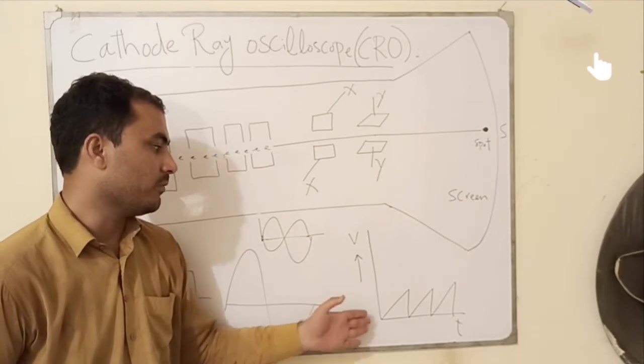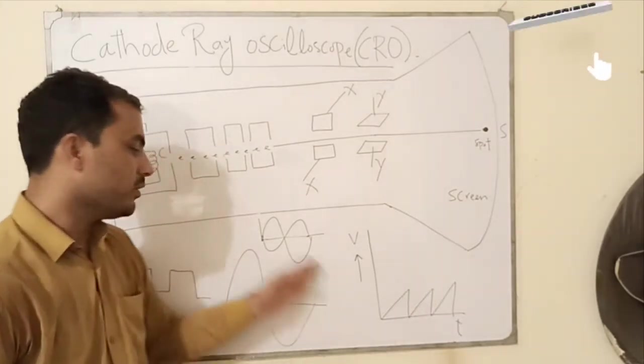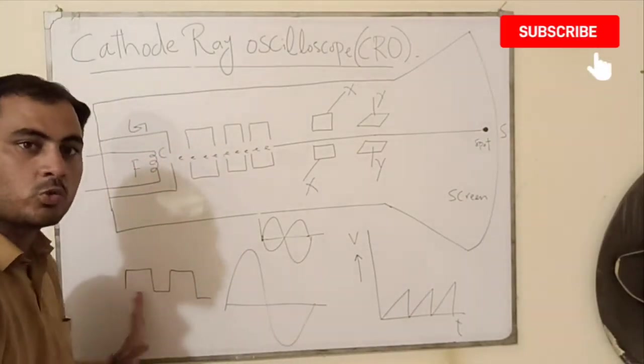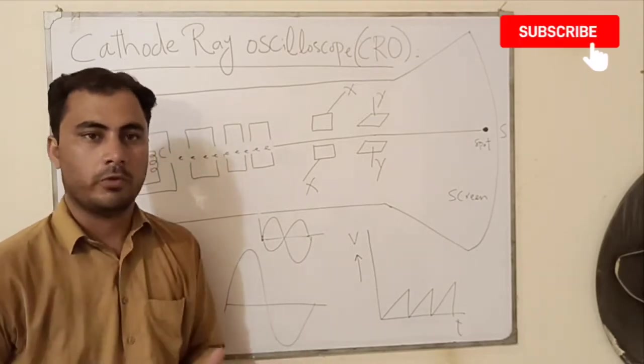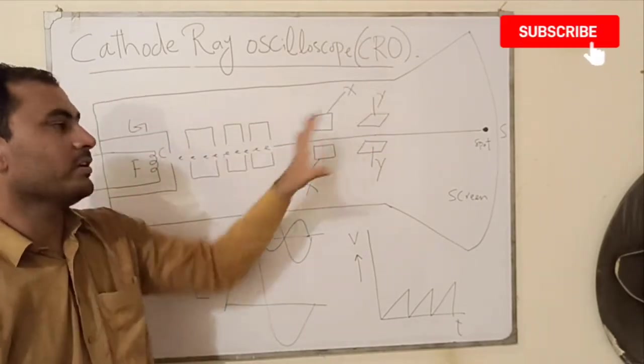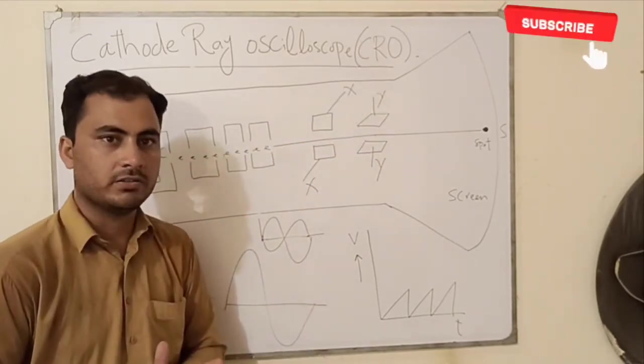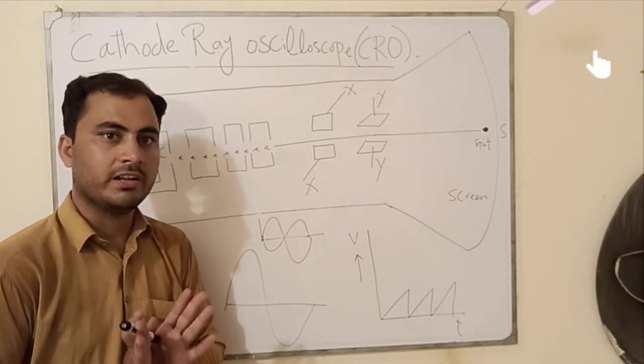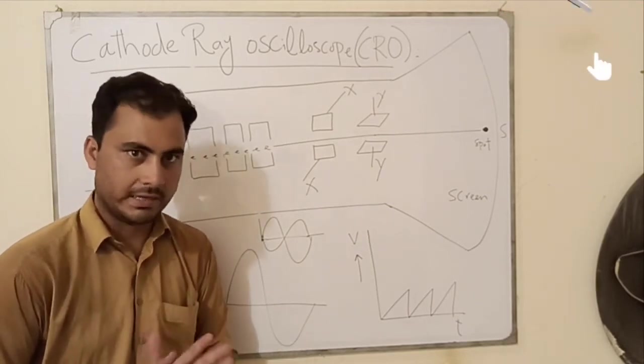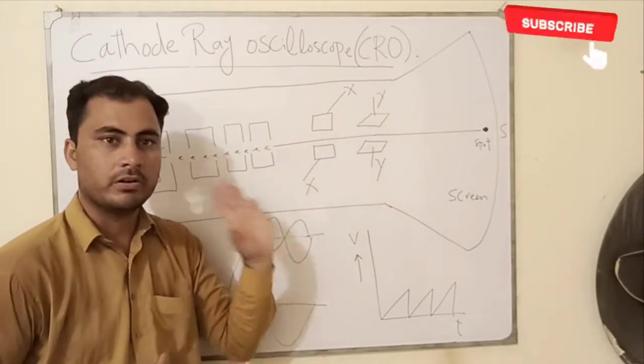Whether that waveform is in sharp form, sinusoidal form, or square wave, or any kind of wave. So Cathode Ray Oscilloscope is basically a high-speed graph plotting device with the help of which we can display waveform of a particular signal. Now let's discuss its different components.